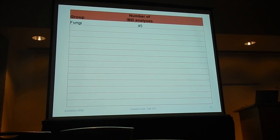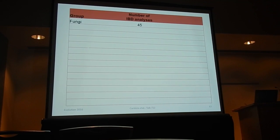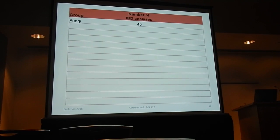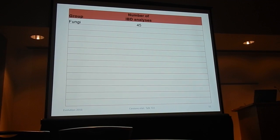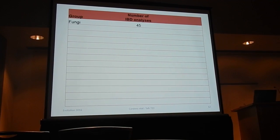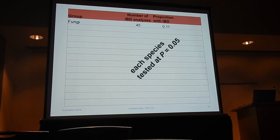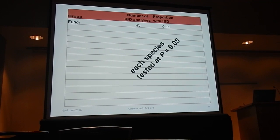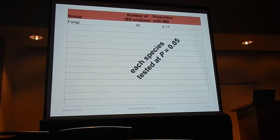How I'm going to present our results: we'll have a series of different taxonomic groups, the number of analyses done (essentially the number of data sets available), and then the proportion of these that were significant at p = 0.05.